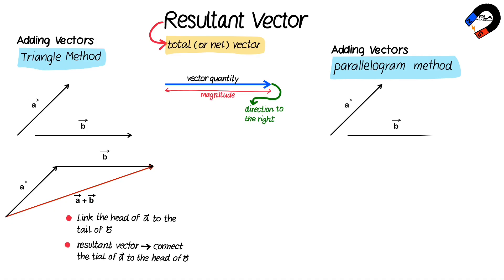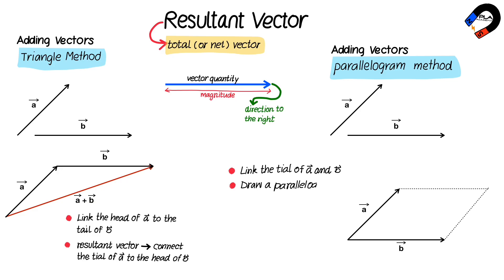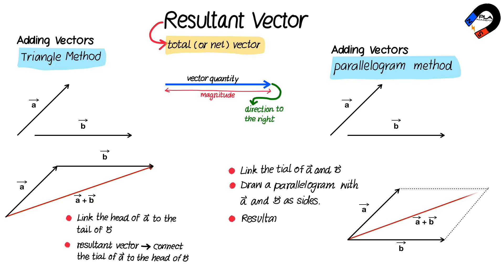To find the resultant of vector A and vector B using the parallelogram method: link the tails of vector A and vector B, then draw a parallelogram with vector A and vector B as sides. The resultant vector is the diagonal of the parallelogram.